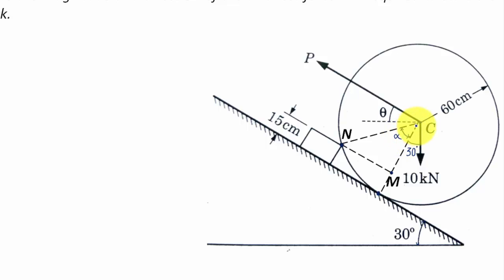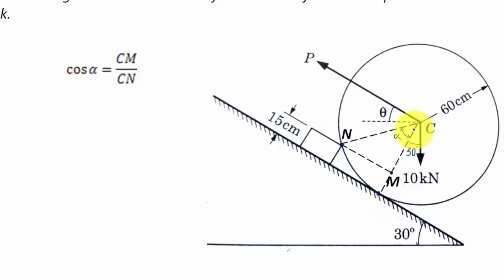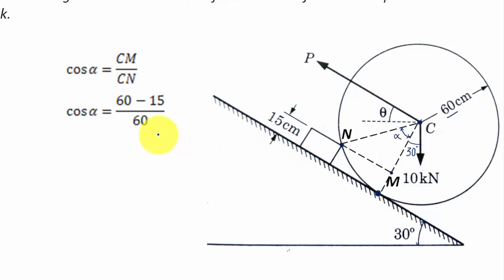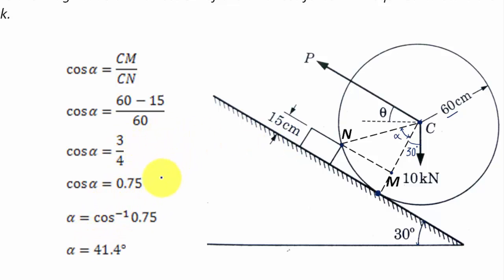In triangle CNM, cos alpha equals base CM over hypotenuse CN. CM equals 60 minus 15, which gives 45. CN is the radius, equal to 60. So cos alpha = 45/60, and solving this gives alpha equal to 41.4 degrees.